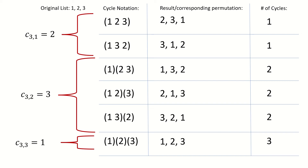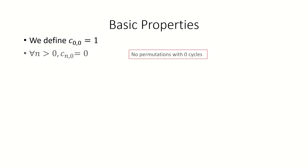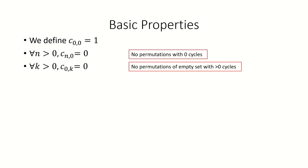Before we look at the recursive relation for Stirling numbers of the first kind, let's look at a few basic properties, some of which you might already be able to guess from the table. First, we define c sub 0 0 to be 1. Second, c sub n 0 equals 0 for all n greater than 0, because there are no permutations of a non-empty list with zero cycles.